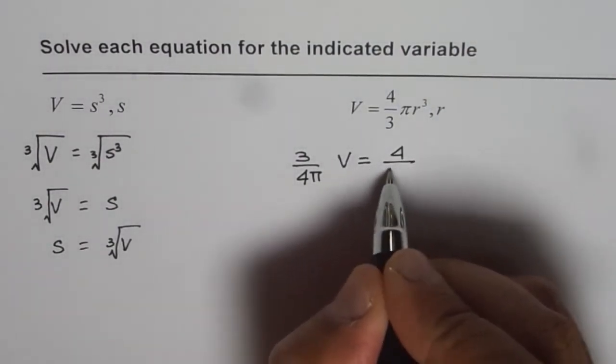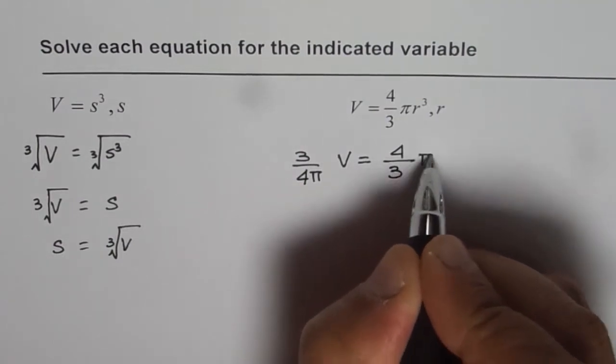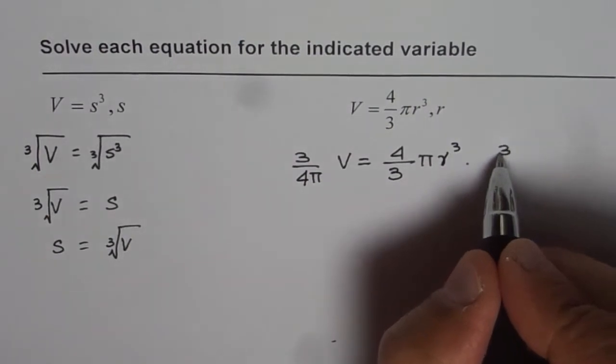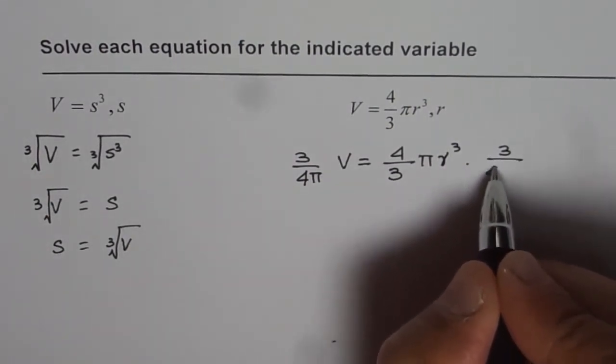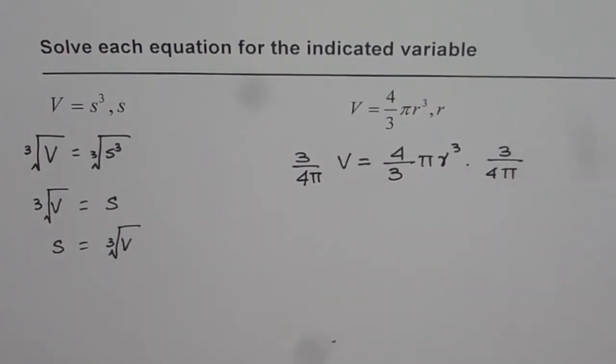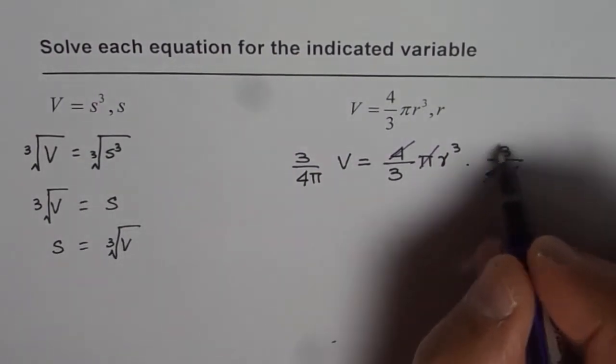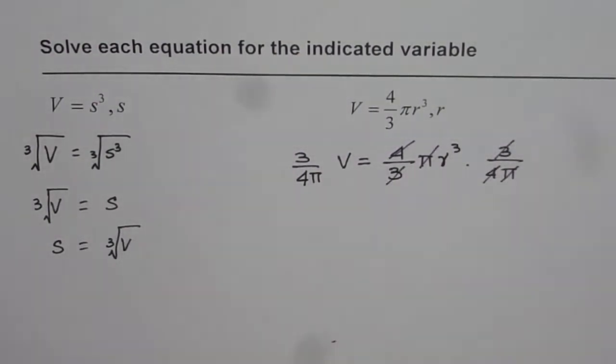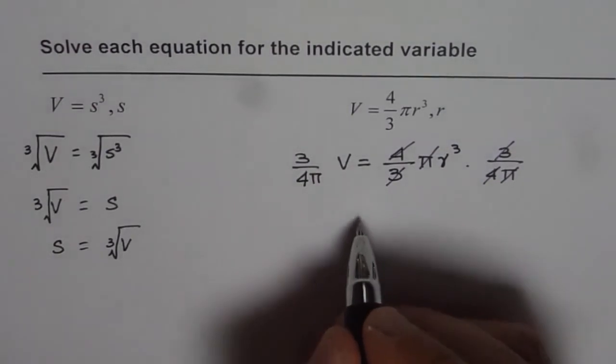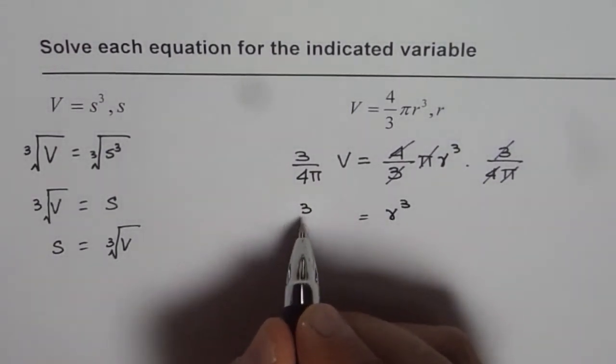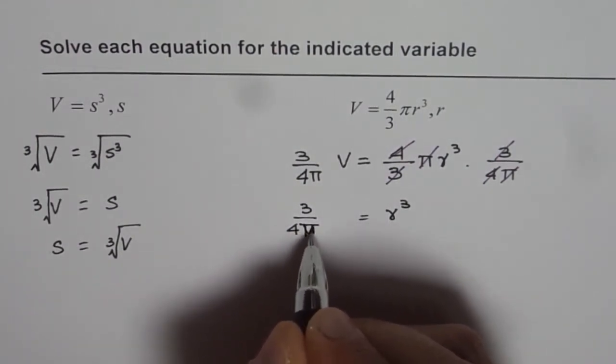Let me rewrite the equation with this reverse operation. The reverse operation which we are doing here is times 3 and divide by 4π. Now as you can see, on the right side, 4 divided by 4 is 1, π divided by π is 1, and 3 divided by 3 is also 1. So what we are left with is R³ equals 3V over 4π.